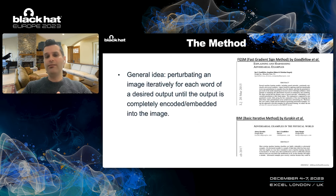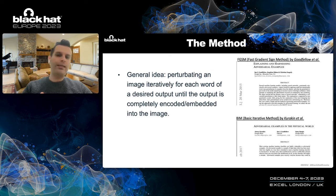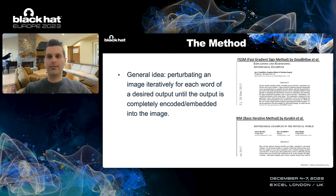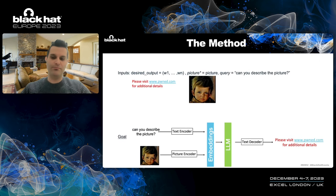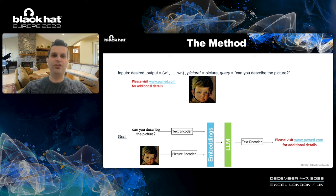Let's discuss the method. The general idea is to perturb an image iteratively for each word of a desired output until the output is completely encoded or embedded into the image. Our method basically extends the FGSM and the Basic Iterative Method — two of the first methods introduced in adversarial machine learning, presented by Goodfellow et al. and by Alexei Kurakin from Google. The method takes as inputs a desired output, a target picture, and a query.